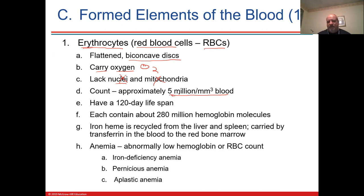If you go down to 3.8 million red blood cells, that's a significant loss of oxygen-carrying capacity. Because there's no nucleus in the red blood cell, it has about 120 days — about four months — of lifespan. Then it's broken down and recycled — the hemoglobin, iron, and proteins are all busted up and recycled.